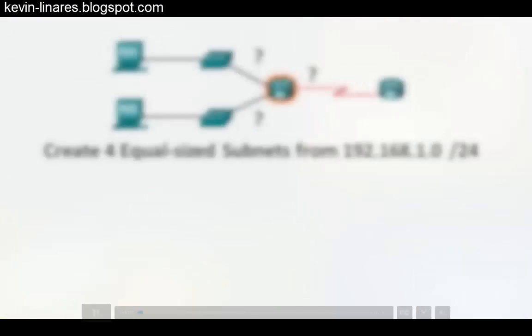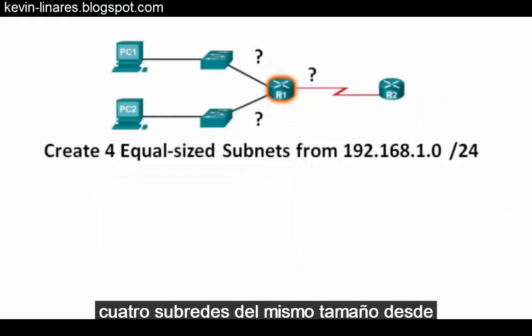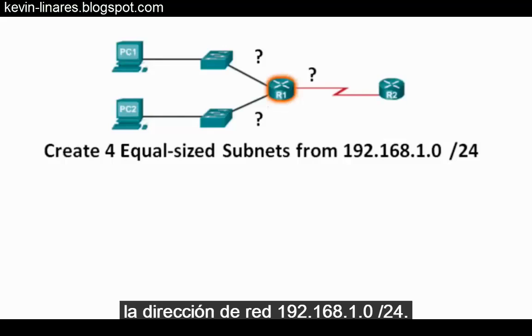In this situation, we're tasked to create four equal-sized subnets, starting from the network address 192.168.1.0 slash 24.